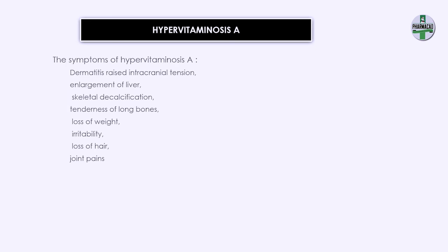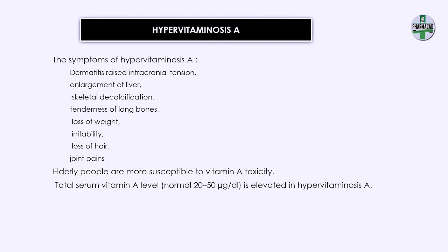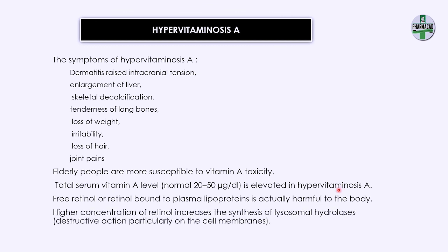Hypervitaminosis A is a condition of toxicity due to excessive consumption of vitamin A. Elderly patients are more susceptible to this toxicity. The total serum vitamin A level must be 20 to 50 micrograms per deciliter; if elevated, it is called hypervitaminosis A. Free retinol or retinol bound to plasma lipoproteins must not exist in the body, because it increases the synthesis of lysosomal hydrolase enzyme, which causes destructive action on the cell membrane.